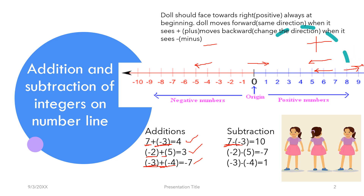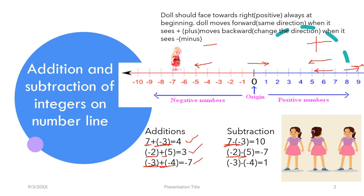Now the second subtraction problem: -2 minus 5. The doll goes to minus 2, and then here she sees a minus value, so she has to move towards the left 5 times — to minus 7. The result is minus 7.